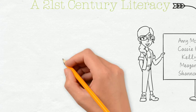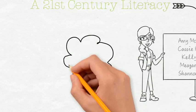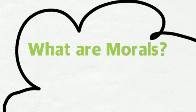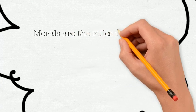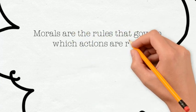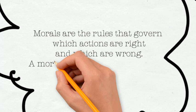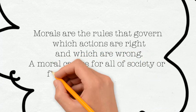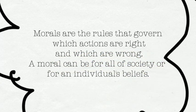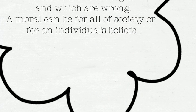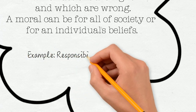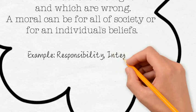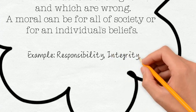Now that we have you here, you're probably wondering: what are morals? By definition, morals are rules that govern which actions are right and which are wrong. A moral can be for all of society or for an individual's beliefs. For example, responsibility, integrity, and honesty are all great morals.